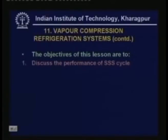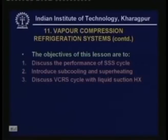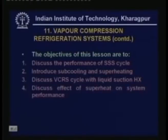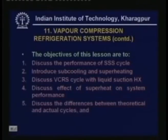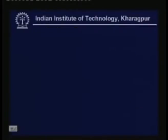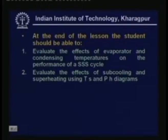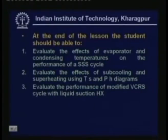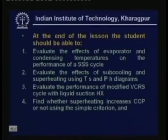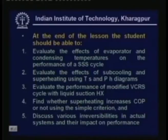The specific objectives of this lesson are to discuss the performance of SSS cycle, introduce sub-cooling and super-heating, discuss vapor compression refrigeration system with liquid suction heat exchanger, discuss effect of super heat on system performance, discuss differences between theoretical and actual cycles, and discuss a complete vapor compression refrigeration system. At the end you should be able to evaluate effects of evaporator and condensing temperatures on SSS cycle performance, evaluate effects of sub-cooling and super-heating using TS and PH diagrams, evaluate performance of modified vapor compression refrigeration system with liquid suction heat exchanger, find whether super-heating increases COP using a simple criteria, and discuss irreversibilities in actual systems.